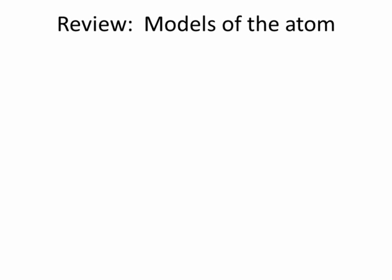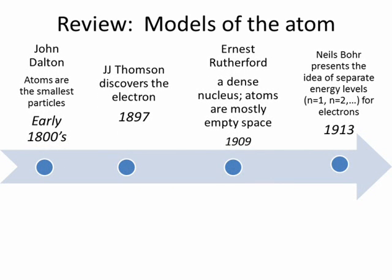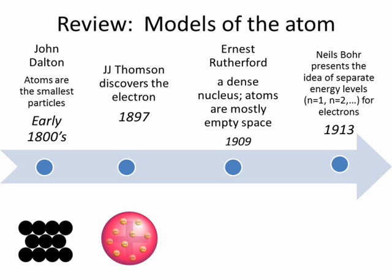The birth of the modern atomic theory came with John Dalton's model in the early 1800s. Dalton said that atoms were the smallest particles that existed. J.J. Thomson did his cathode ray tube experiment and proved that part of the atom was negatively charged, and he said that these negative charges were spread out throughout a general positive area of the atom. Ernest Rutherford did the gold foil experiment and proved that the positive part of the atom was actually a very dense nucleus, and that most of the atom was made up of empty space.